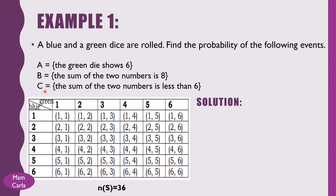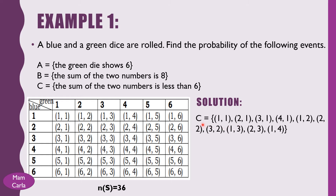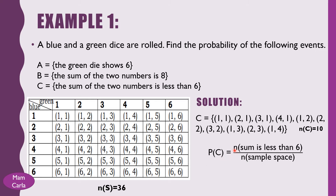Now let us find the probability of Event C, where the sum of two numbers is less than 6. The list of possible outcomes for event C includes: (1,1), (2,1), (3,1), (4,1), (1,2), (2,2), (3,2), (1,3), (2,3), (1,4) — 10 pairs in total. The cardinality of event C is 10. So the probability of event C equals 10 divided by 36, or in lowest terms, 5 over 18. This means the probability of getting a sum less than 6 is 5/18.